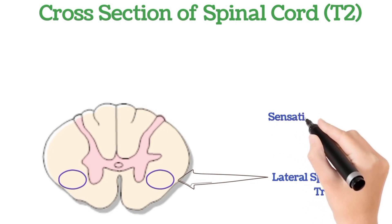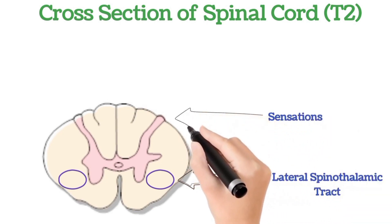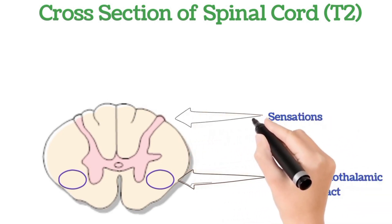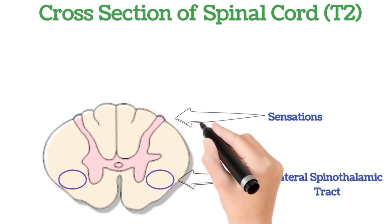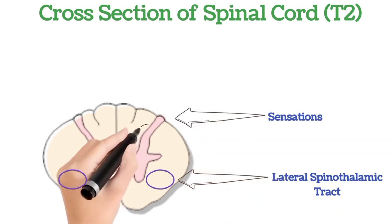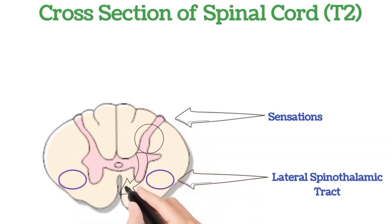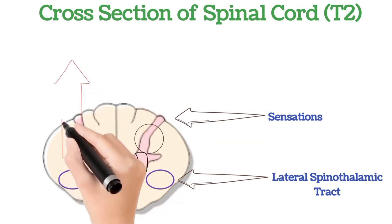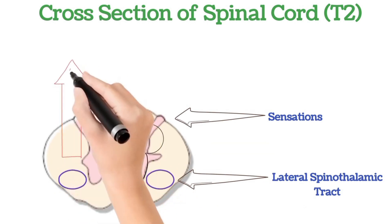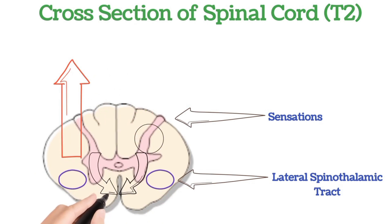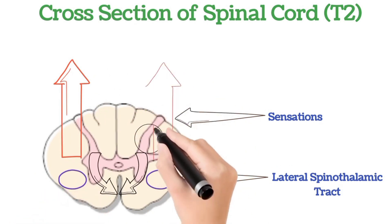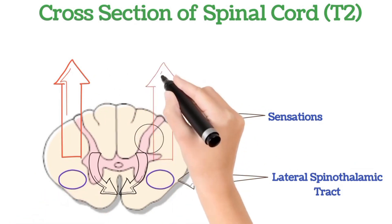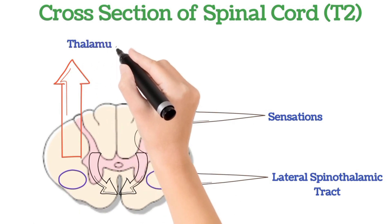The sensations are carried by nerve fibers through the dorsal root to the dorsal horn, where they synapse. The fibers then decussate and ascend upwards in the contralateral spinothalamic tract. Similarly, fibers from the other side also decussate and ascend upwards in the contralateral spinothalamic tract, carrying sensations towards the thalamus and brain.